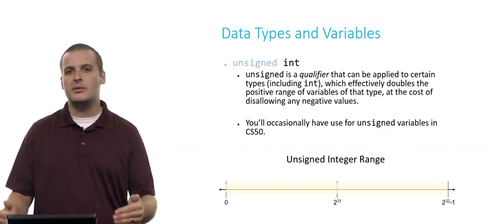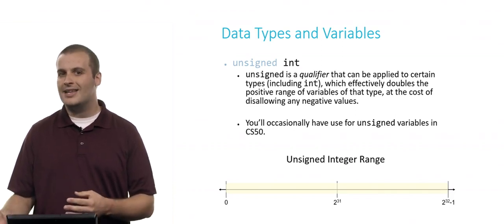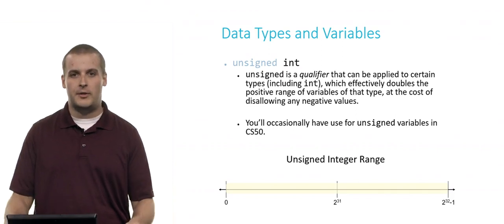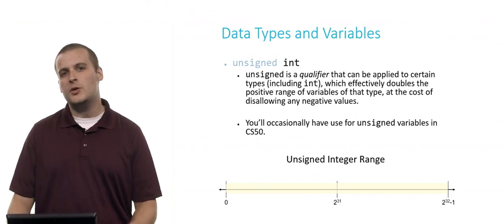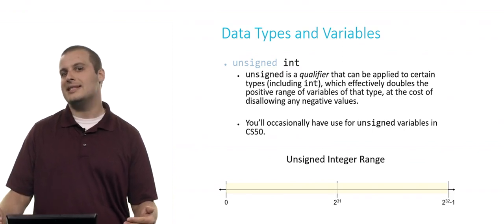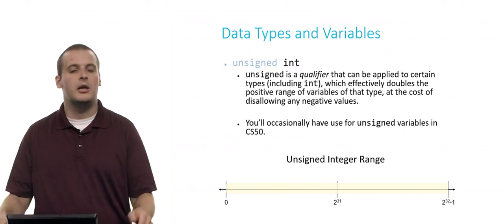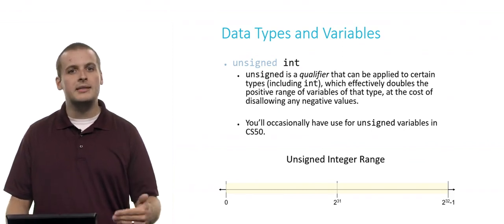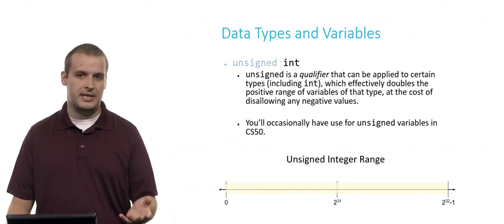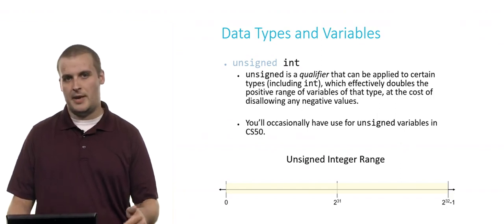What it effectively does is doubles the positive range of values that an integer can take on at the expense of no longer allowing you to take on negative values. So if you have numbers that you know will get higher than 2 billion, but less than 4 billion, for example, which is 2 to the 32nd power, you might want to use an unsigned int if you know your value will never be negative. You'll occasionally have use for unsigned variables in CS50, which is why I mention it here.